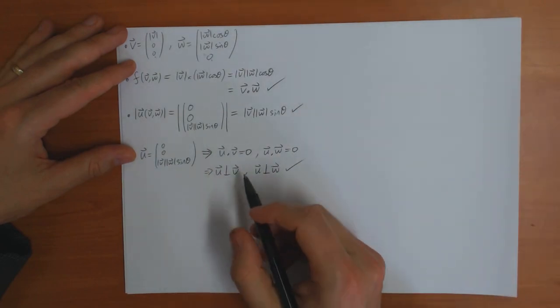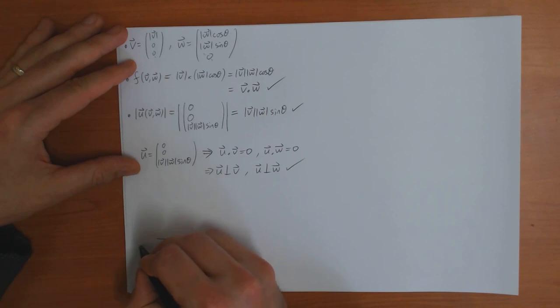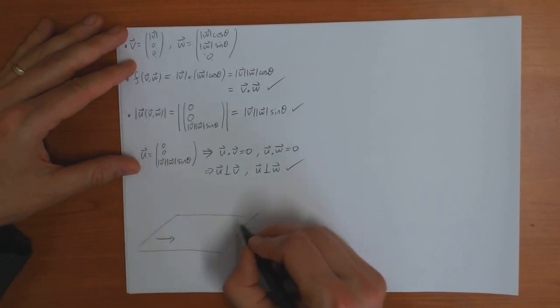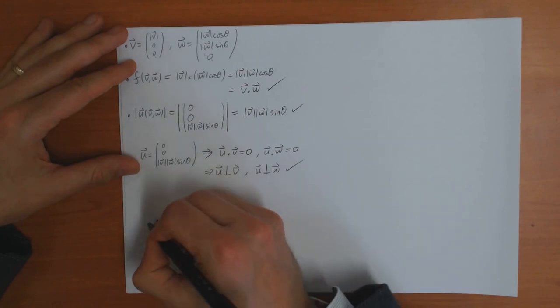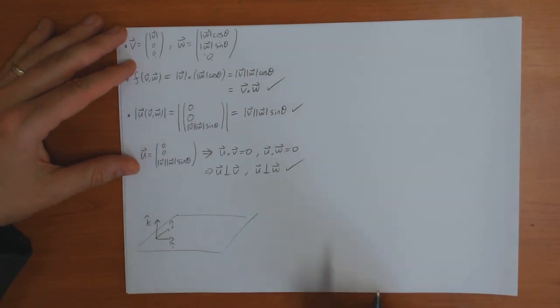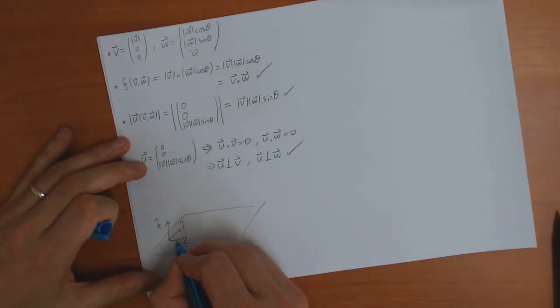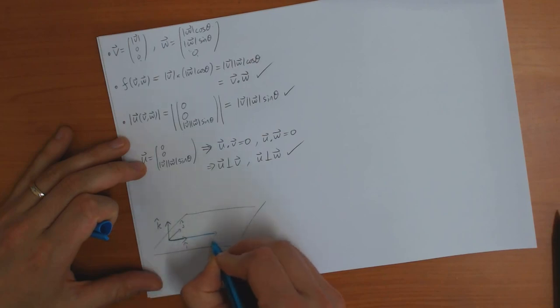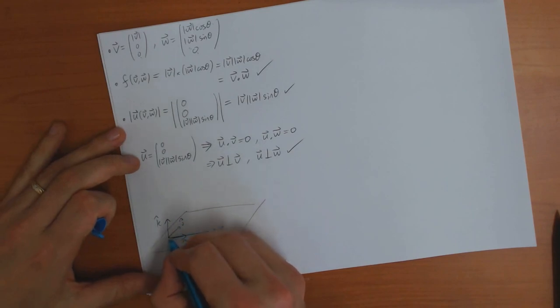And the final thing you have to check is the right hand rule, and well as I've drawn it here let's just check that. Suppose then here's my ij plane, i, j, k coming out like this. And then the vector v as I drew it here is like this, v. The vector w had positive j component, that's important, so w is like this.